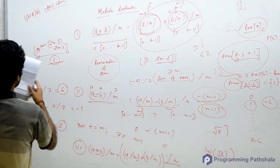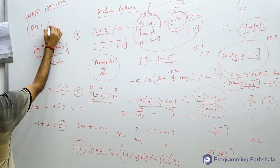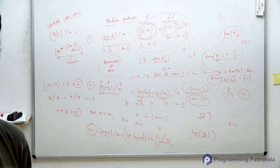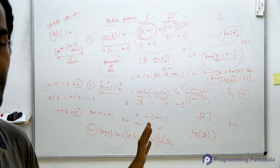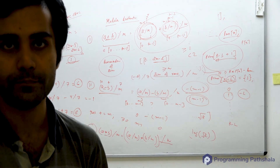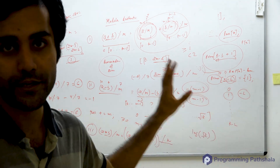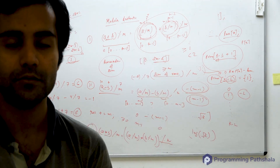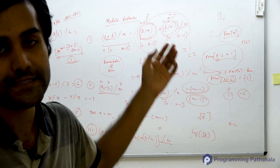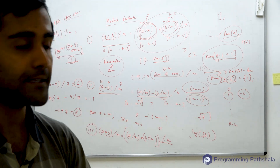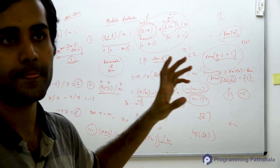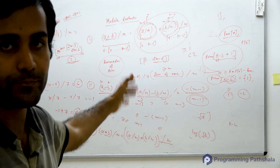Now let's talk about division: (a / b) mod m. Can the modulus operator be distributed over a and b when there is a divide operator between them? The answer is no — you cannot do that. There is a totally different kind of approach for it called inverse modulo. We will not go into details of that today; we will cover it later. For now, remember: the modulo operator cannot be distributed easily over division. It is applicable only for addition, subtraction, and multiplication.